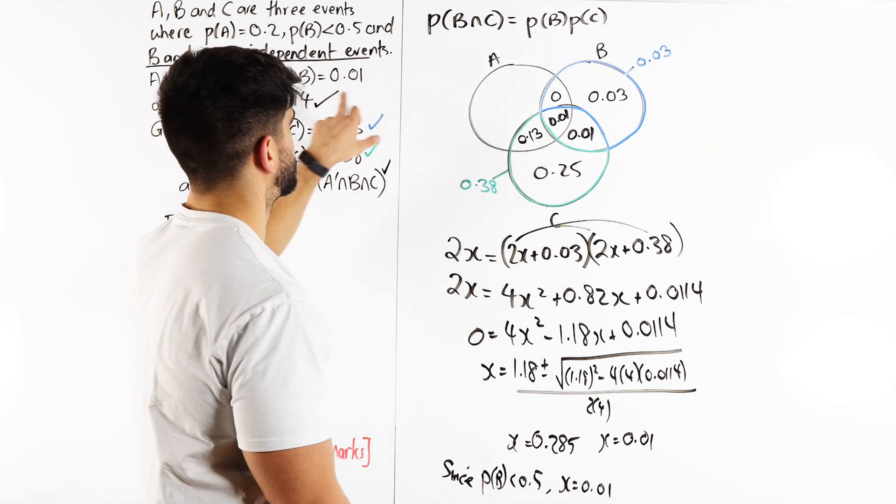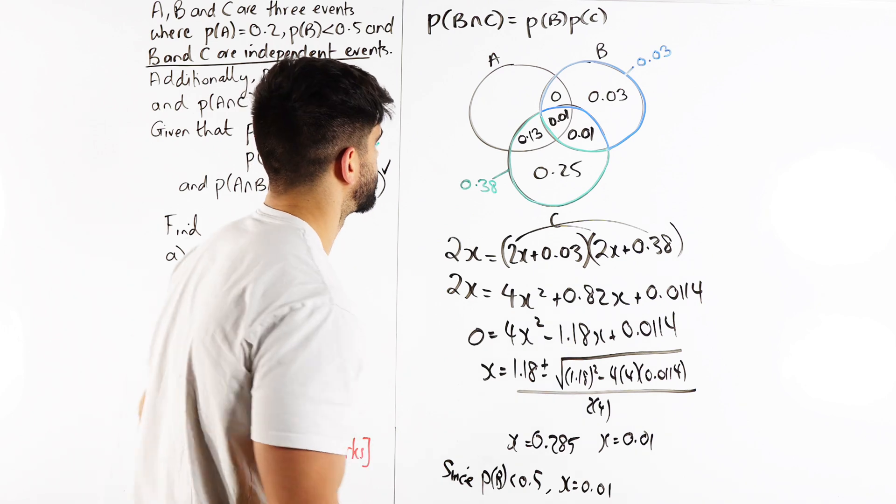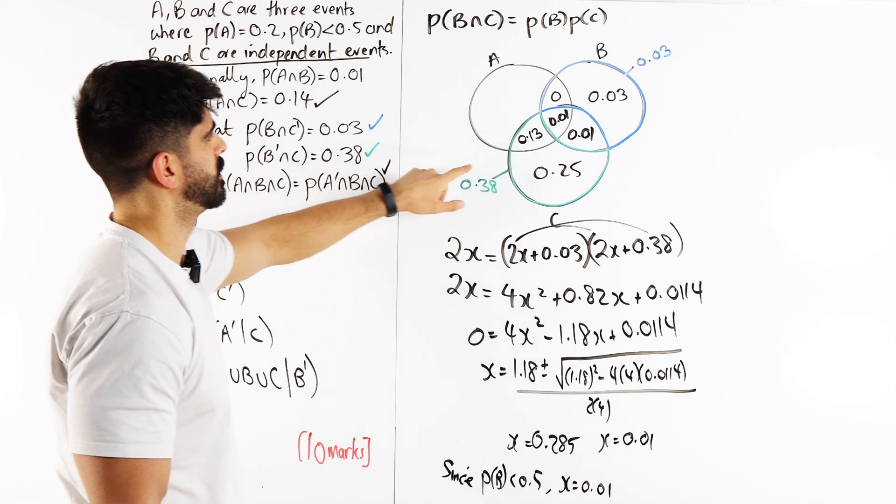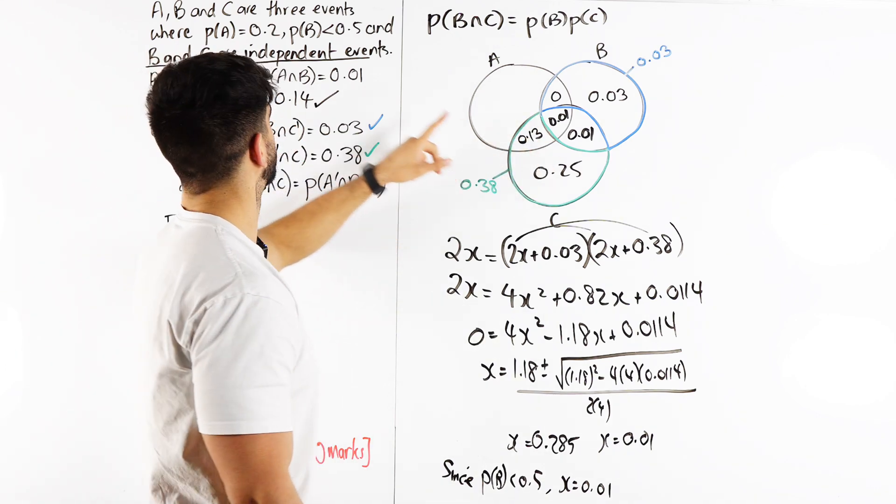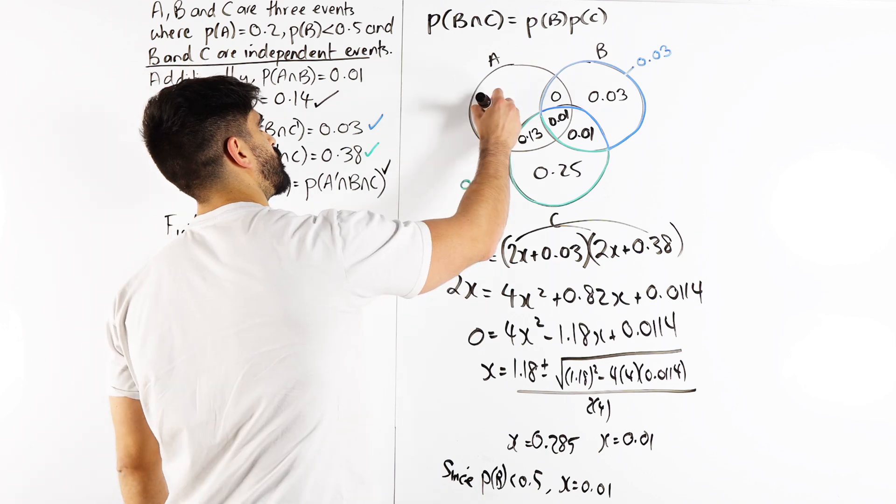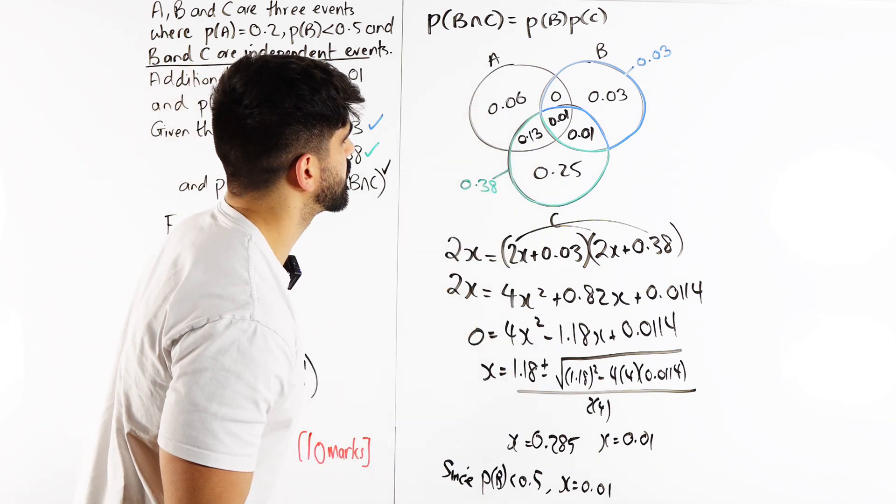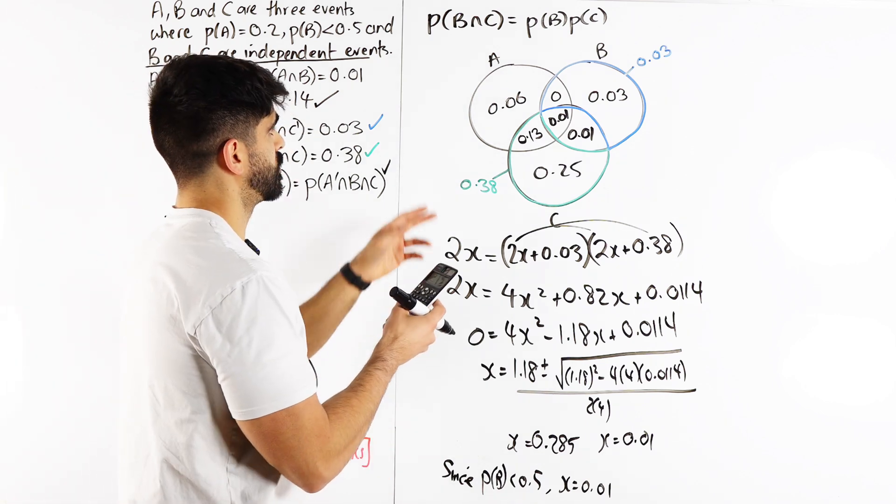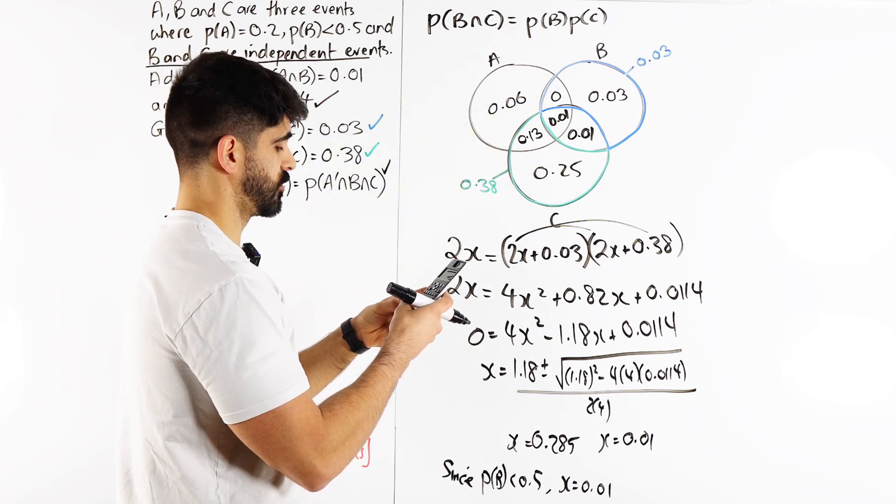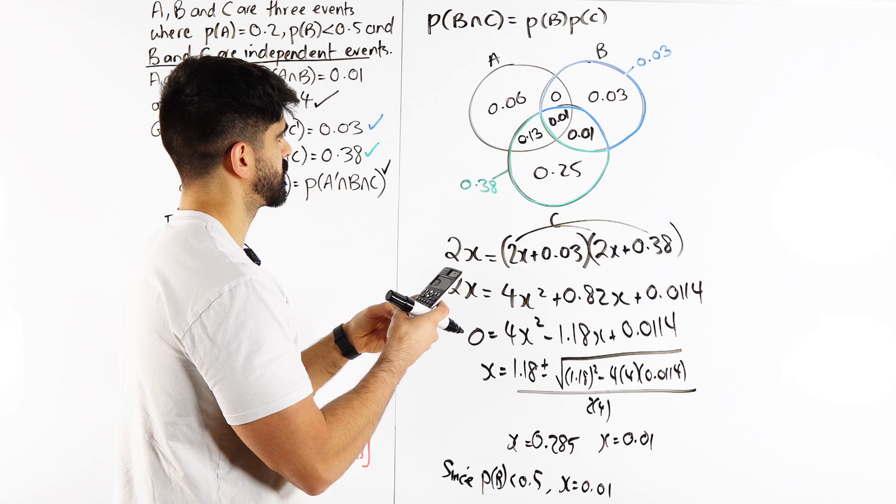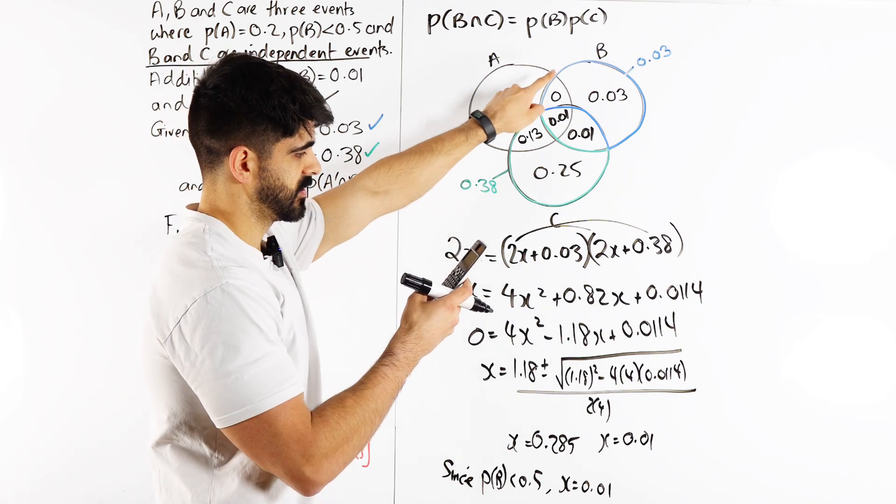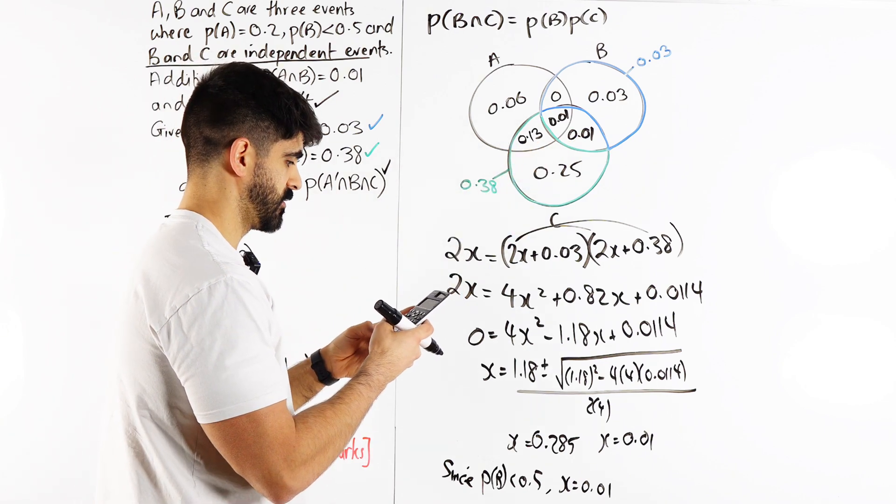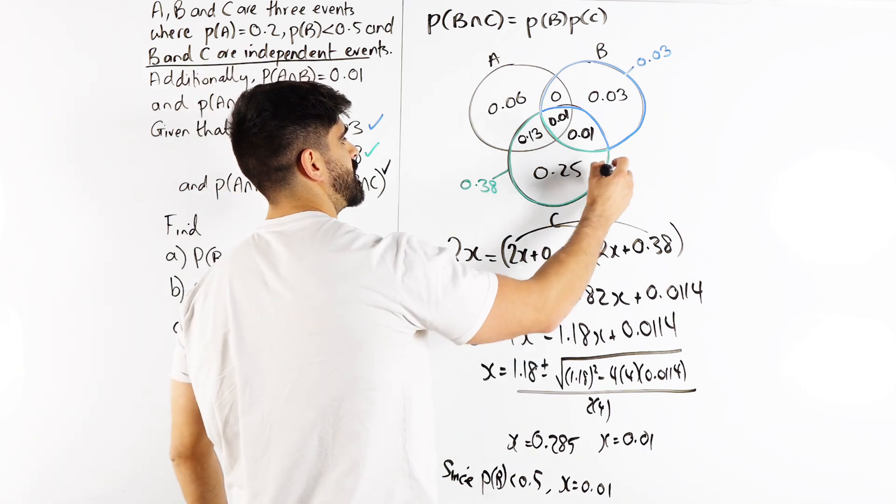The probability of A is 0.2. So when you add these, you get 0.14. If you want 0.2, this is 0.06. Now we can work out what's on the outside. We're doing 6 plus 3 plus 1 plus 1 plus 13 plus 25. That's 49. So we do 100 minus that, 51. On the outside is 0.51. Got there.